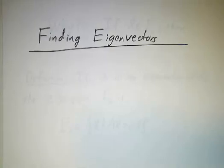In the last video, we talked about how to find the eigenvalues of a matrix. You find the characteristic polynomial, you find the roots of that characteristic polynomial, and boom, you've got the eigenvalues.